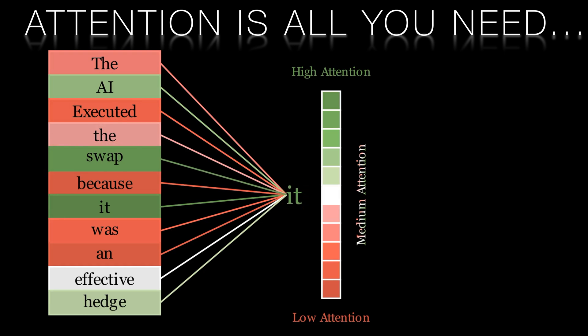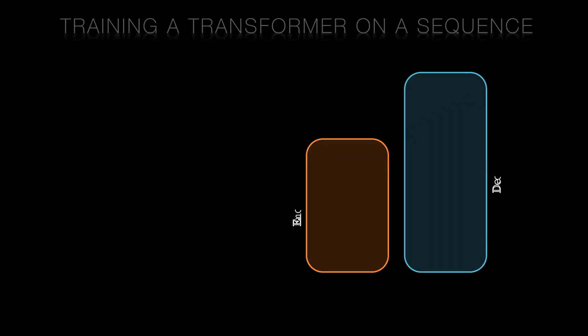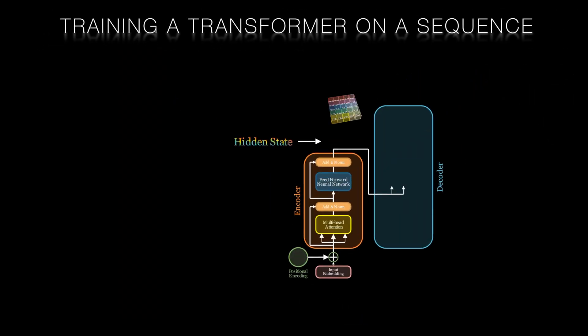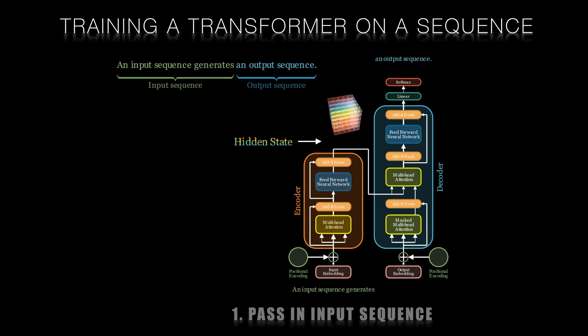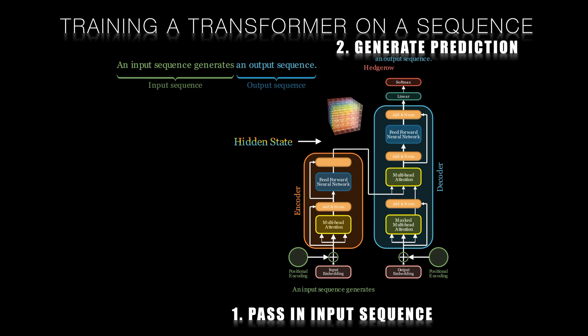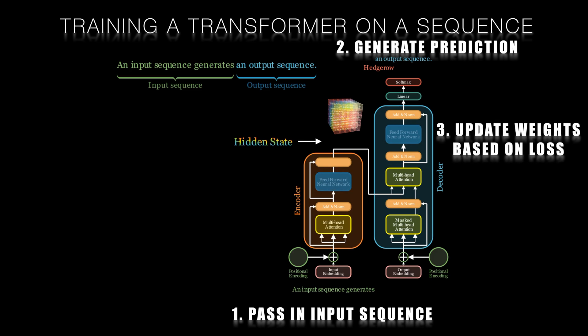The attention mechanism combined with the transformer architecture allows LLMs like GPT-4 to efficiently process and generate text in a way that is more flexible and powerful than previous approaches. This has led to significant improvements in a wide range of natural language processing tasks, such as machine translation, text summarization and sentiment analysis, and has paved the way for the development of even more advanced AI language models in the future.